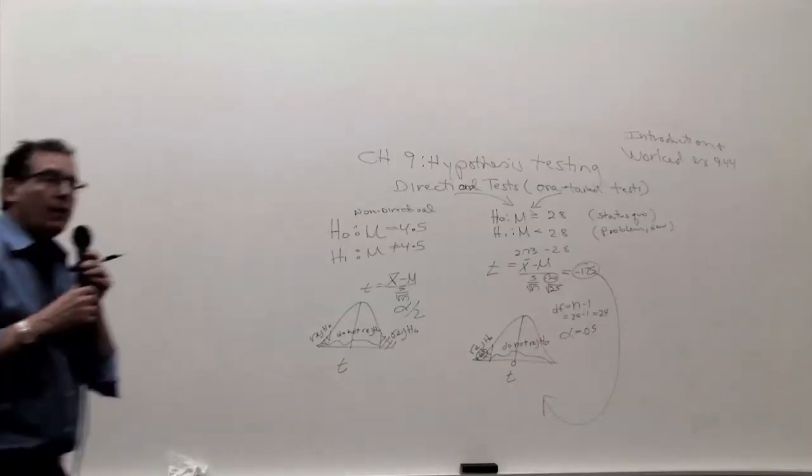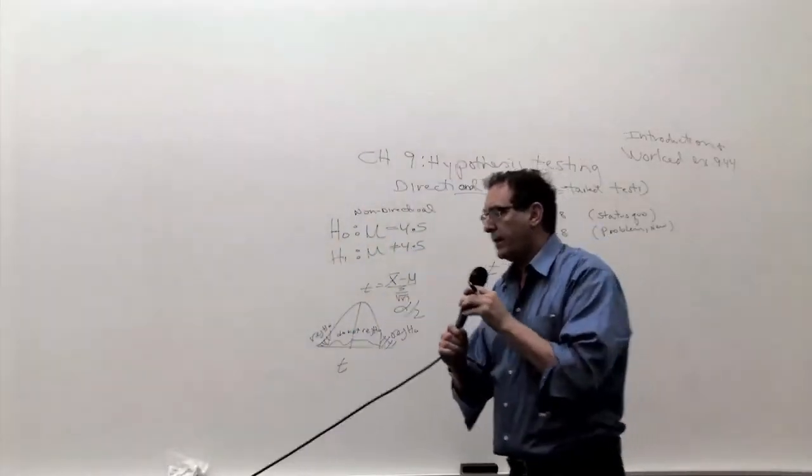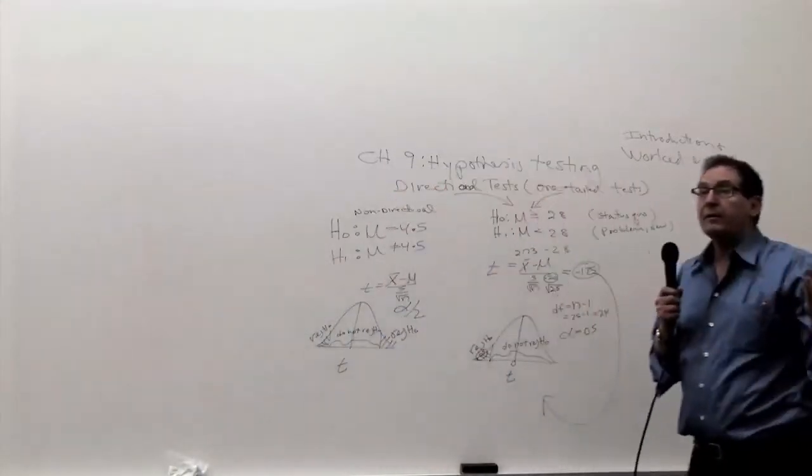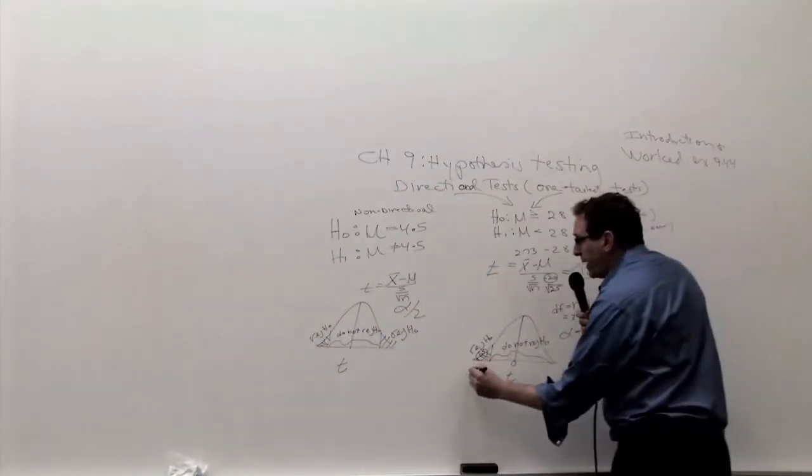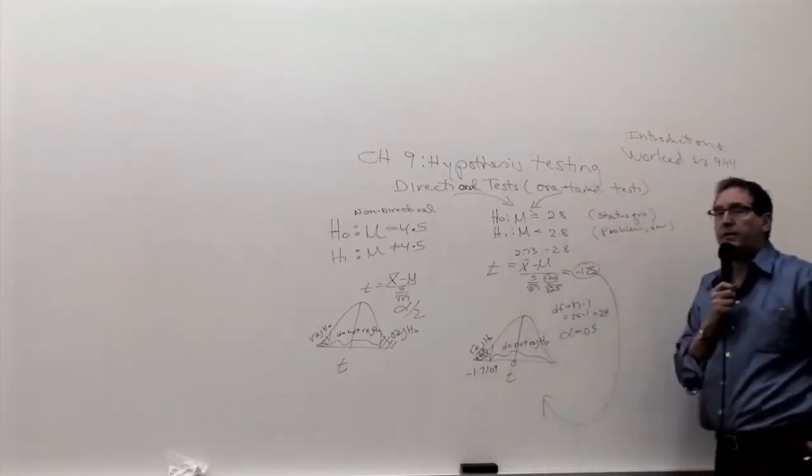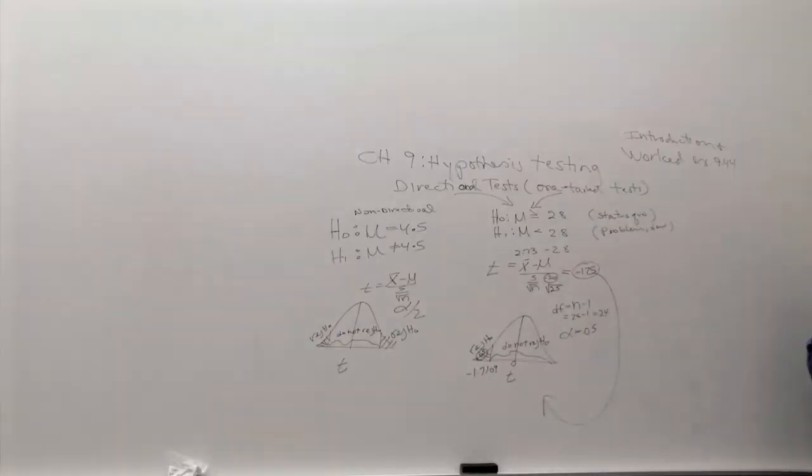1.7109, anybody's welcome to confirm that, but of course this is where a little knowledge is important. You have to manually put a minus 1.7109 because that's what it pictures to the minus side of the table, negative side of the table.